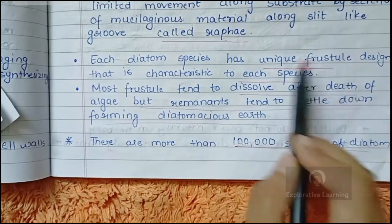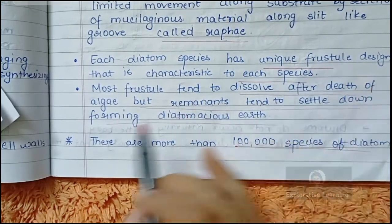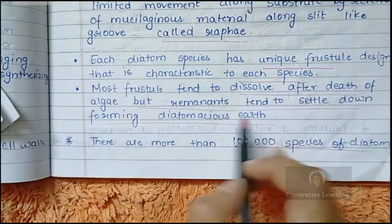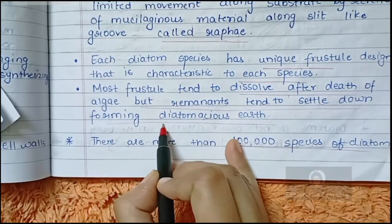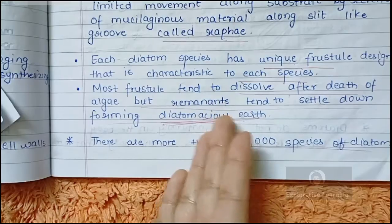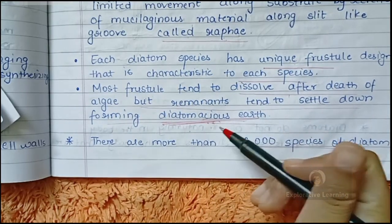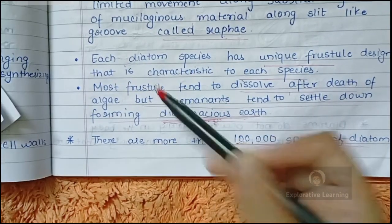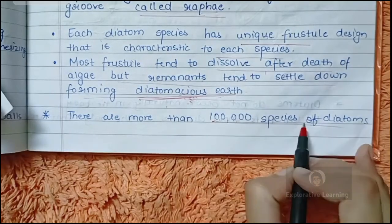Each diatom species has a unique frustule design — the cell wall of each diatom species is very unique on its own. After the death of the algae, the frustules dissolve and their remnants settle down, which forms diatomaceous earth. So the lowermost deposit inside the water is nothing else but the frustule of the diatom.